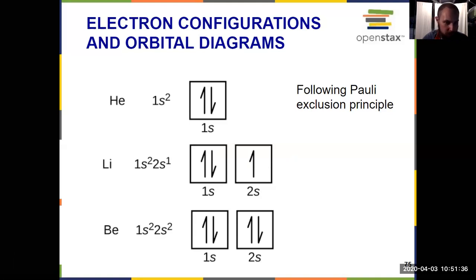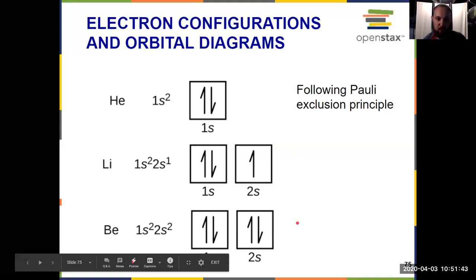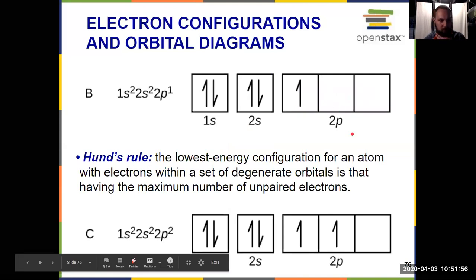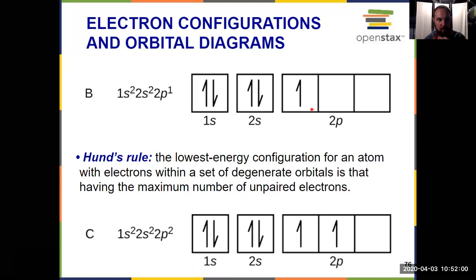But after beryllium, our next electron, which would be the fifth electron, then goes into the 2p orbital, 2p subshell, which has three orbitals. So when I get to boron, now to draw this p subshell, which is made up of three orbitals, it gets three boxes. But it only has one electron in the 2p, so it's just a single arrow. And again, by convention, you show it all the way to the left.